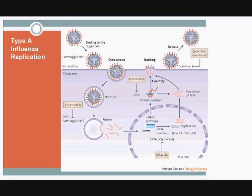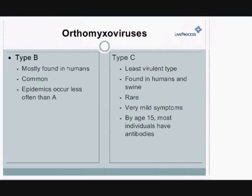The other two types of orthomyxoviruses are type B and type C. Type B influenza is also found in humans. It is somewhat common, but you're not going to have pandemics — you'll have epidemics less frequently than with type A. Type B outbreaks are found in confined facilities like correctional facilities or nursing homes, where the people inside are somewhat confined.